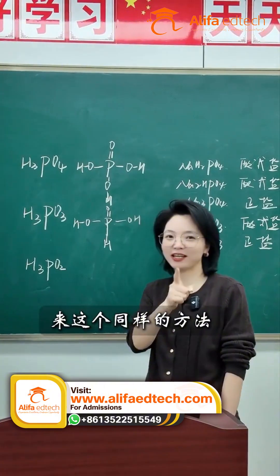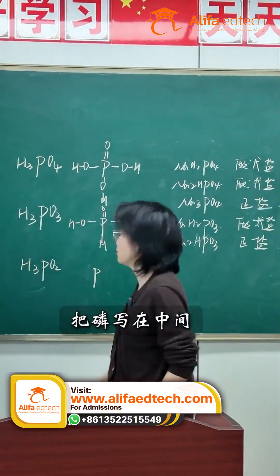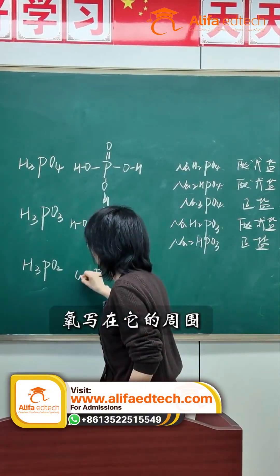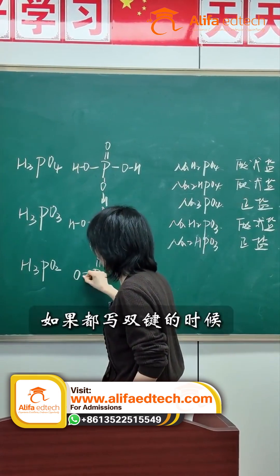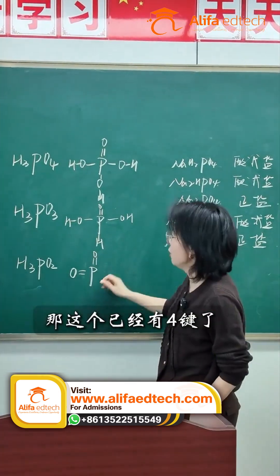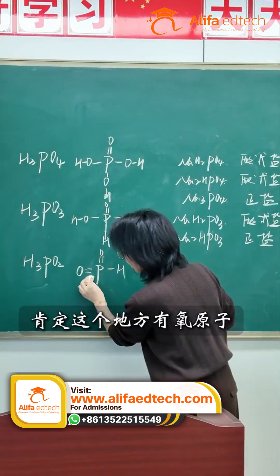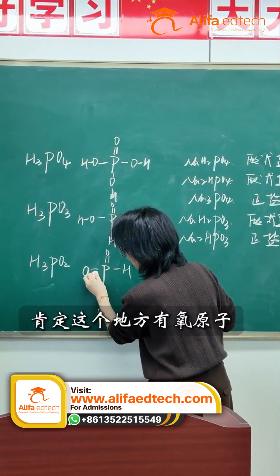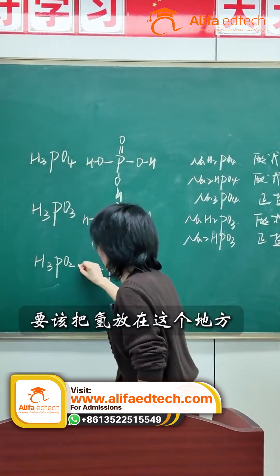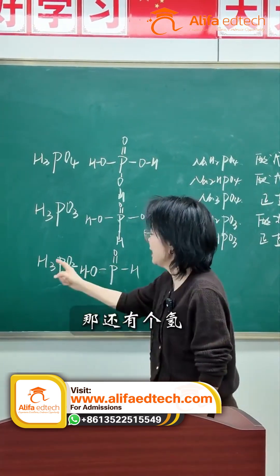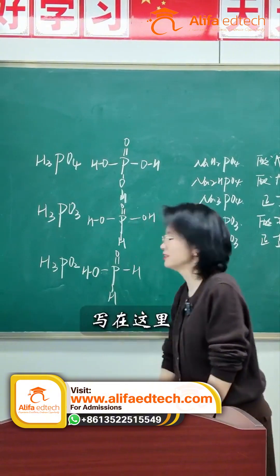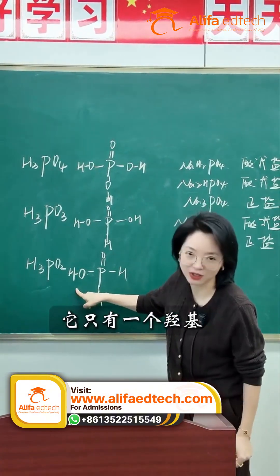Okay. Let's use the same method here. Write the zero in the middle or around it. Now, if we write double keys, there are already four items, so I can only put one more at most. To clarify, since there's an oxygen atom here, it can't be written as a double bond. A hydrogen atom needs to be placed here. There's another hydrogen atom written here, and we can see it only has one hydroxyl group.